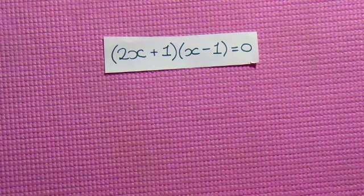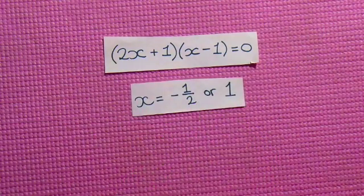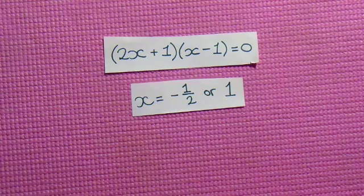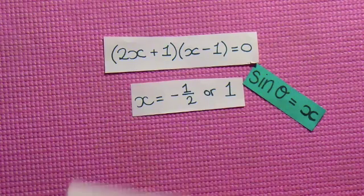Now find values of x that will make the equation equal to 0. These are negative 1/2 or 1. Remember, x stood for sinθ so we can now write it like this.